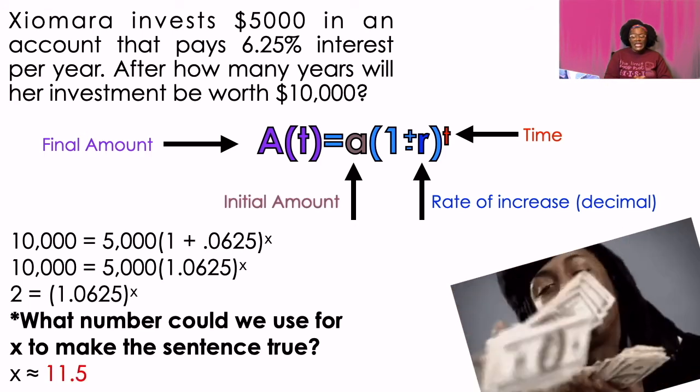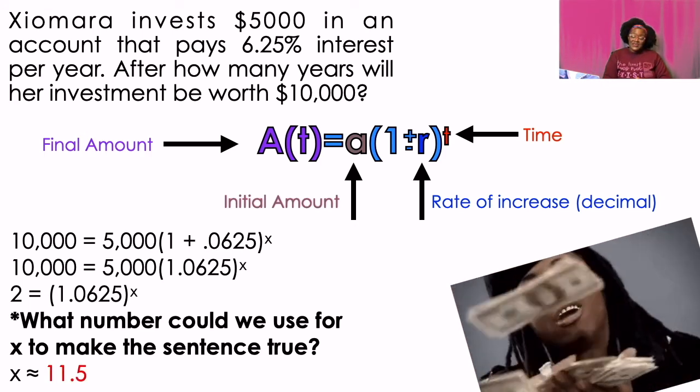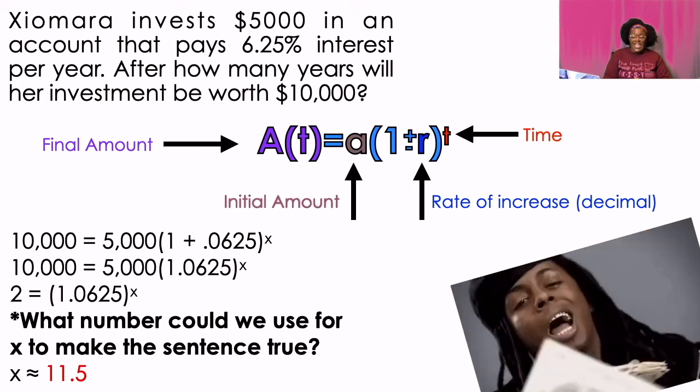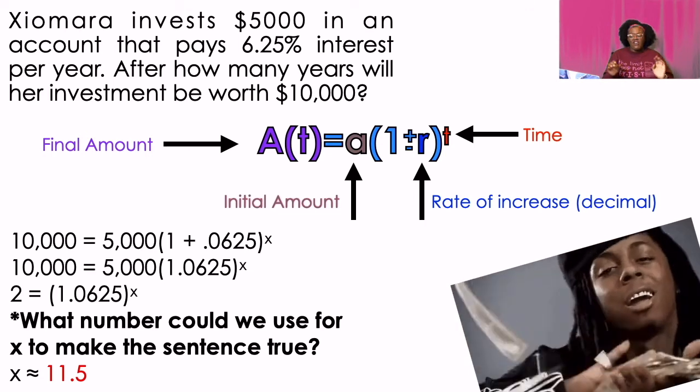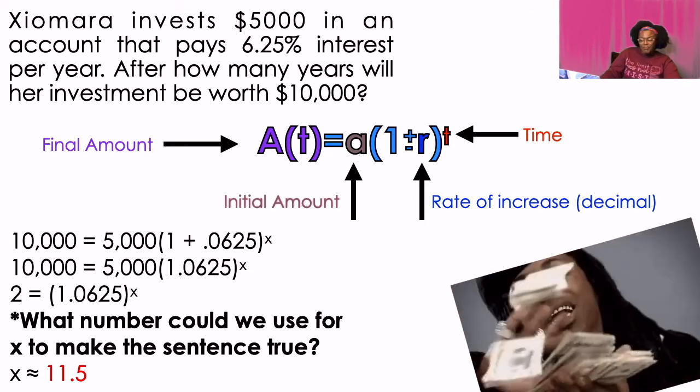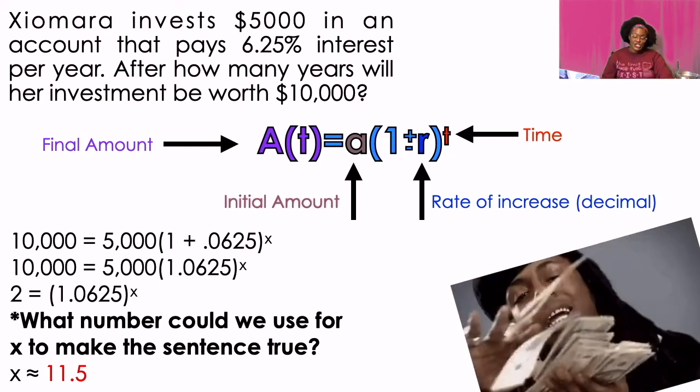Well, you will find if you plug in 11.5 years, so 11 and a half years approximately is how long it's going to take for that money to double at that rate in that account, starting at $5,000. They don't make accounts like that no more, baby. They sure don't. Last but not least, try this one on your own. Pause the video.